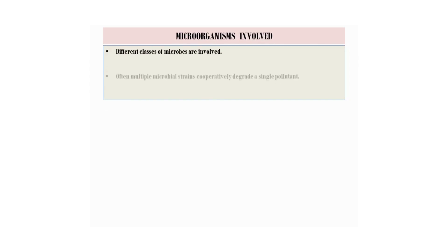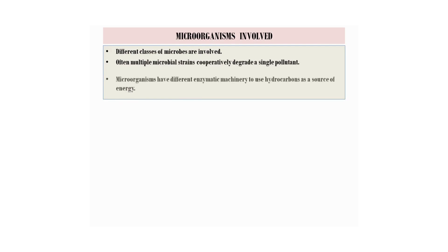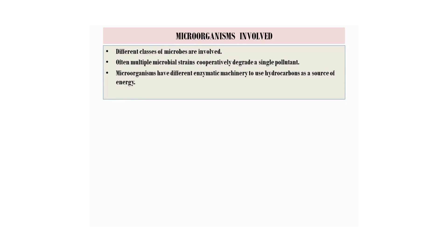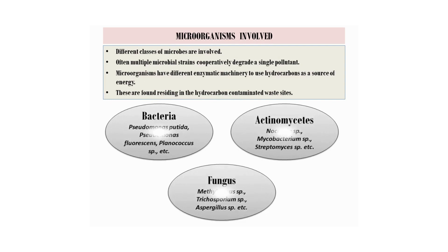What are the microorganisms involved in the biodegradation of hydrocarbons? There can be different classes of microbes involved in the process. Often, multiple microbial strains cooperatively degrade a single pollutant. Microorganisms have different enzymatic machineries to use hydrocarbons as a source of energy, and are found residing in hydrocarbon-contaminated waste sites. Examples of bacteria that participate include Pseudomonas putida, Pseudomonas fluorescens, and Planococcus species.